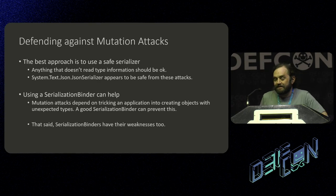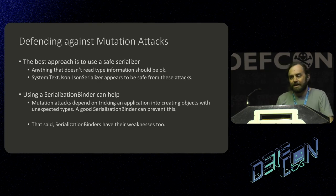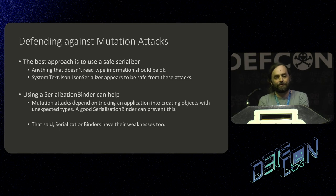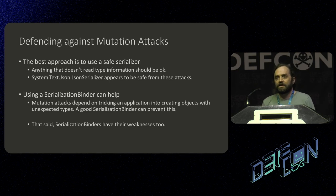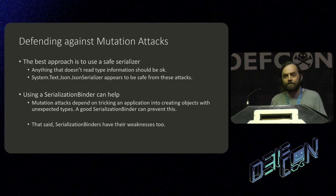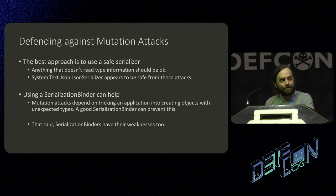You can defend against these attacks several ways. If you're writing an application, the best thing is don't use a polymorphic serializer — don't use a serializer where the data gets to tell you what type it wants to be. If you have to, you can try using a serialization binder, but I'm about to tell you how to bypass serialization binders, so take that with a grain of salt.